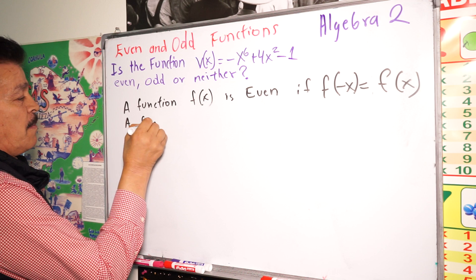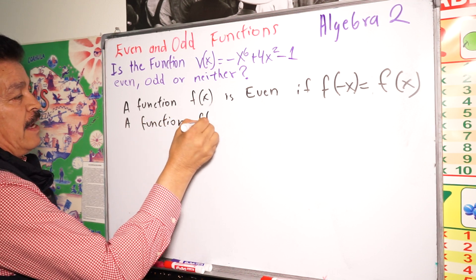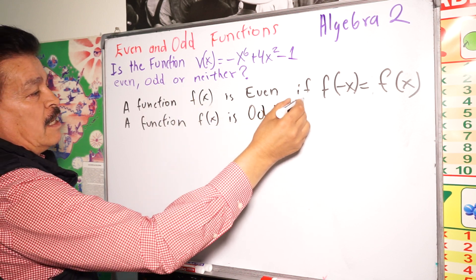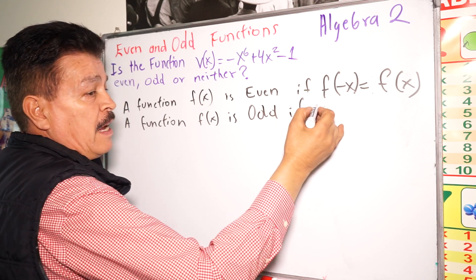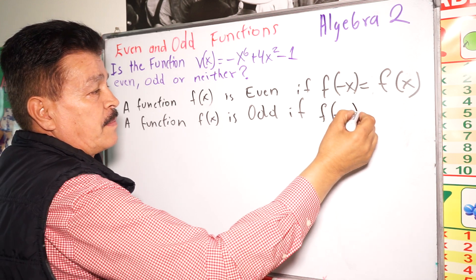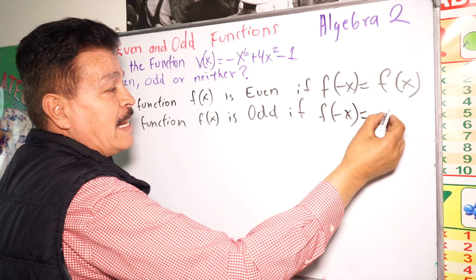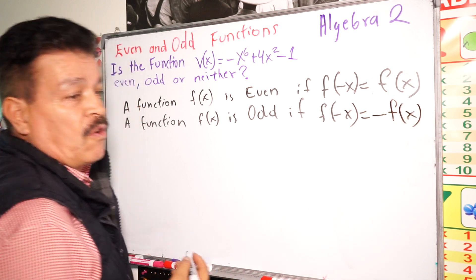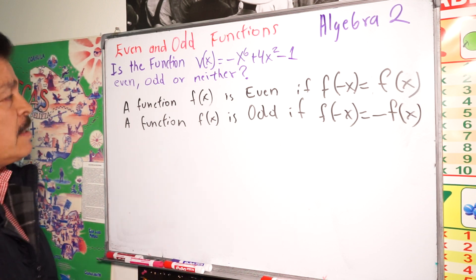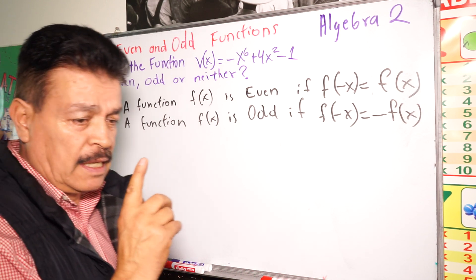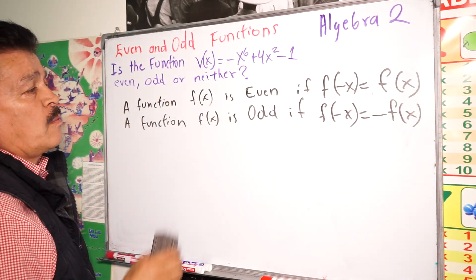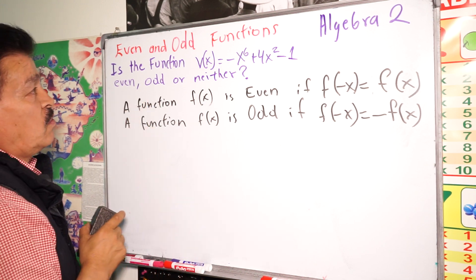Also, a function f(x) is odd if f of negative x equals negative f(x) for all values of x in its domain. This is a very important concept or rule that we have to remember before trying to solve this problem.